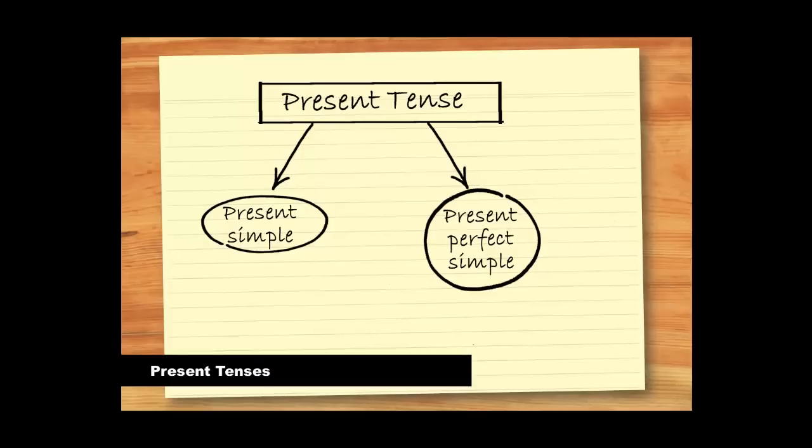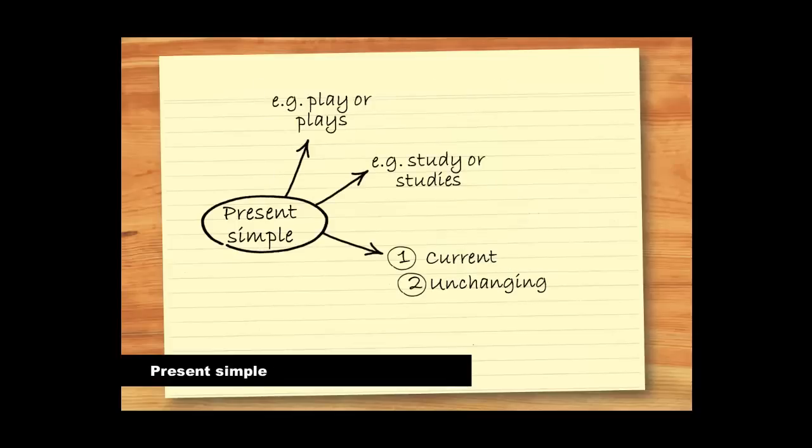Let's look at the present to begin with. The two most common forms of the present used in academic writing are shown here. By present simple we mean verbs such as these. We can see that the present simple indicates something is set in the current time or is unchanging.